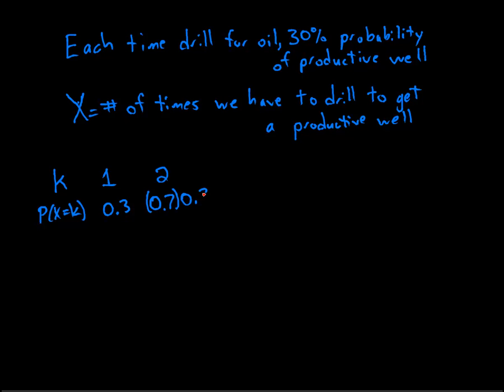And we're going to assume that those events are independent. The results of that first drilling did not affect the result of the second drilling. That's an assumption any time you're dealing with a geometric random variable.